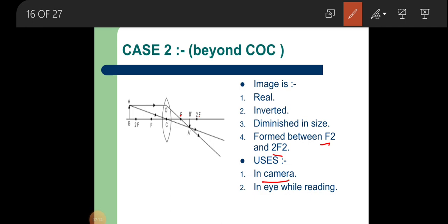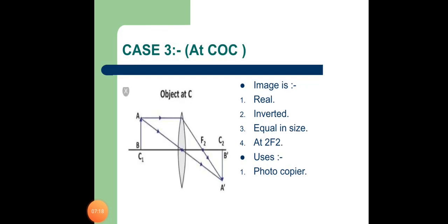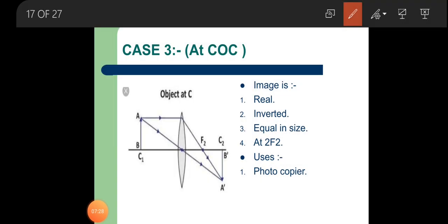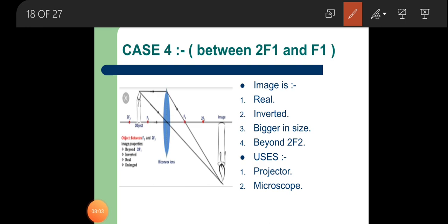Moving to condition three: object placed at the center of curvature. Two rays are selected — one coming parallel to the principal axis and one passing through the optical center. Both rays after refraction meet at point A'. If your object is AB, your image is A'B'. Properties: real, inverted, equal in size, and formed at 2F2. This condition is used in photocopiers.